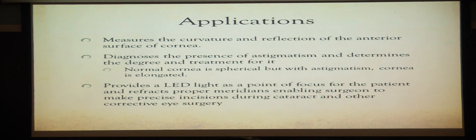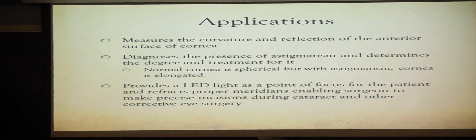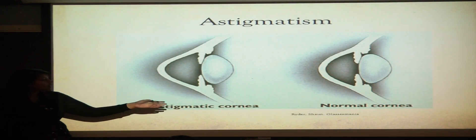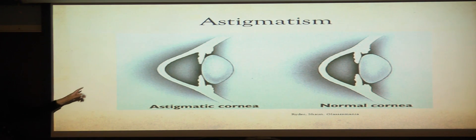Some applications of the keratometer: as I stated previously, it measures the curvature and reflection of the anterior surface of the cornea. It can also diagnose astigmatism and determine the degree and extent to which it happens to help guide treatment. The keratometer also provides an LED light as a point of focus for the patient, and this light is refracted so surgeons can use this information to make proper incisions on the eye during cataract and corrective eye surgery. If you look at this image right here, normal corneas are perfectly spherical. However, if you look at the eye affected by astigmatism, it's more elongated and kind of pushed out.